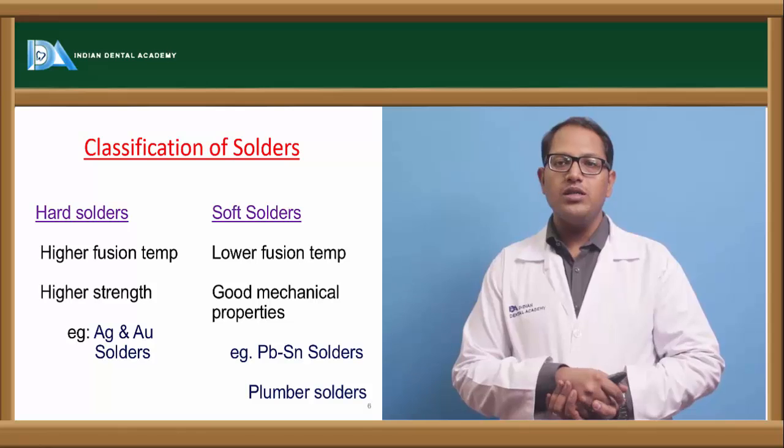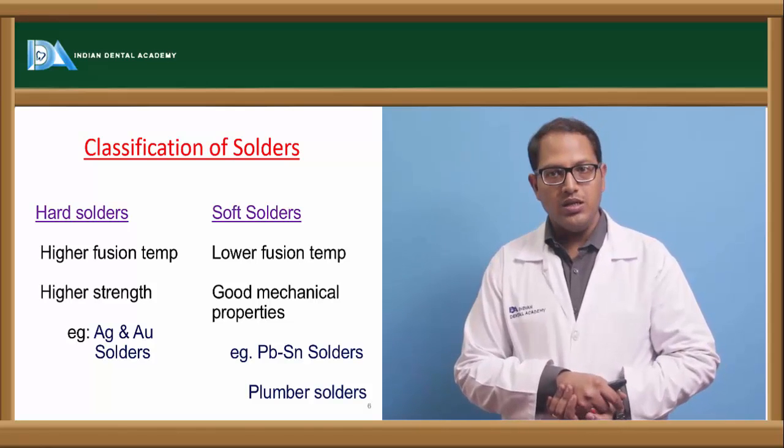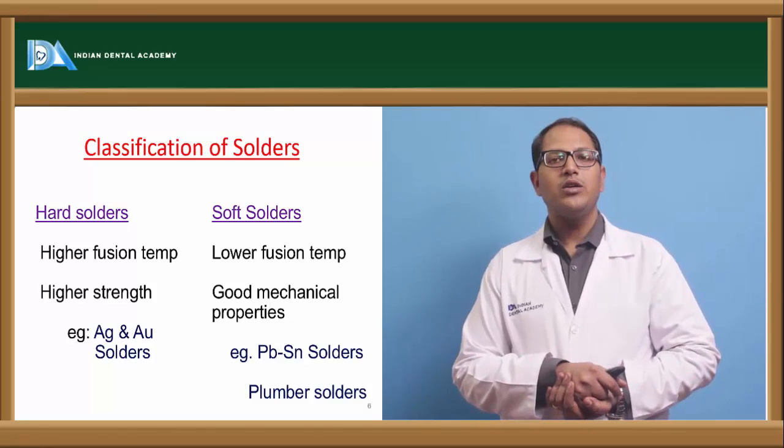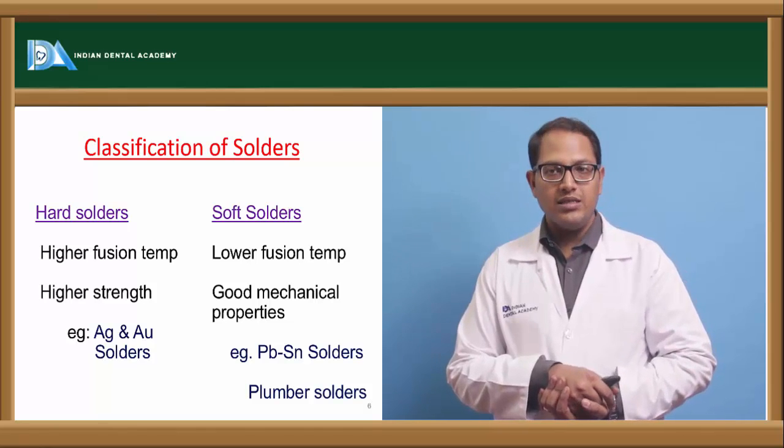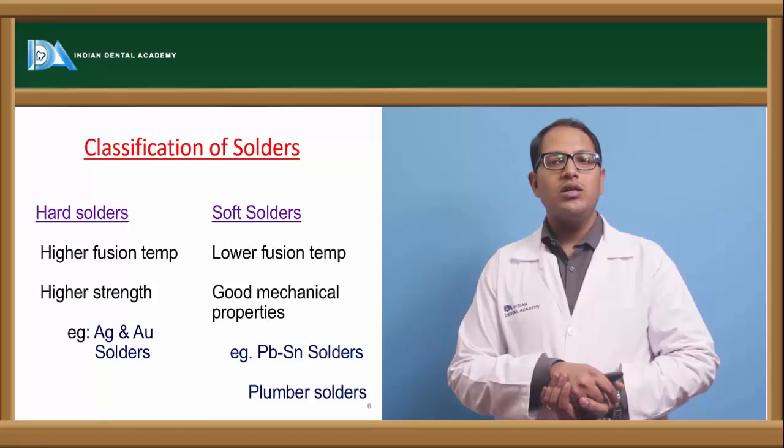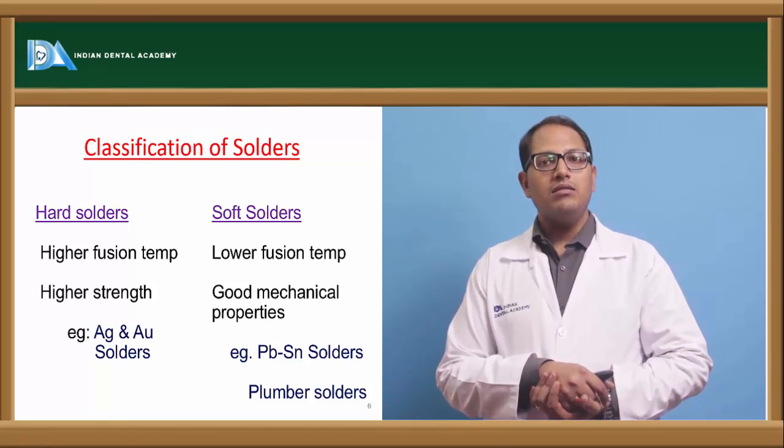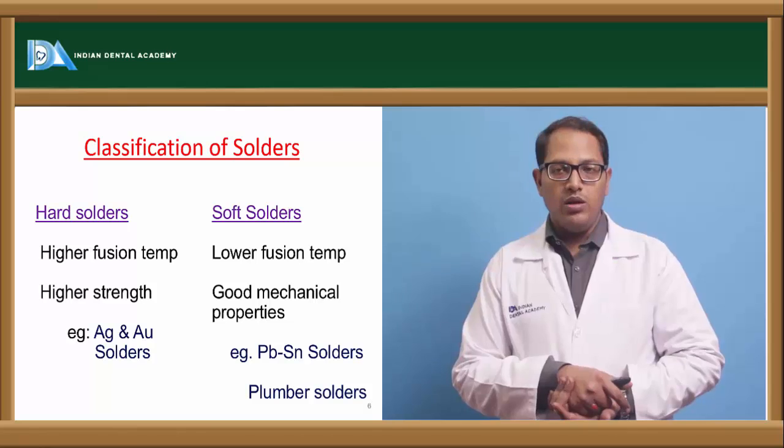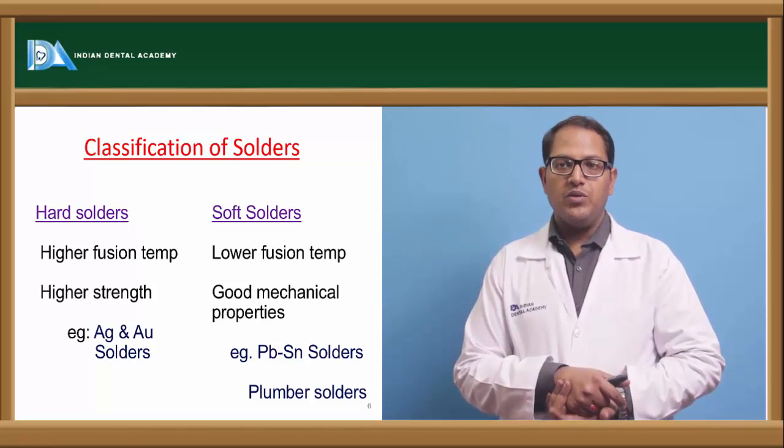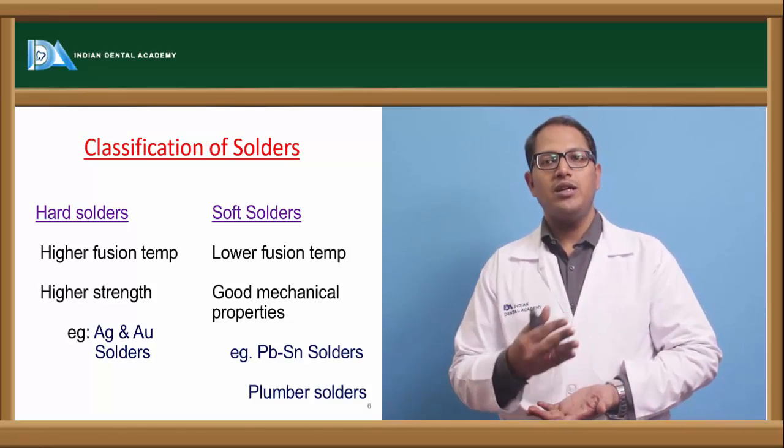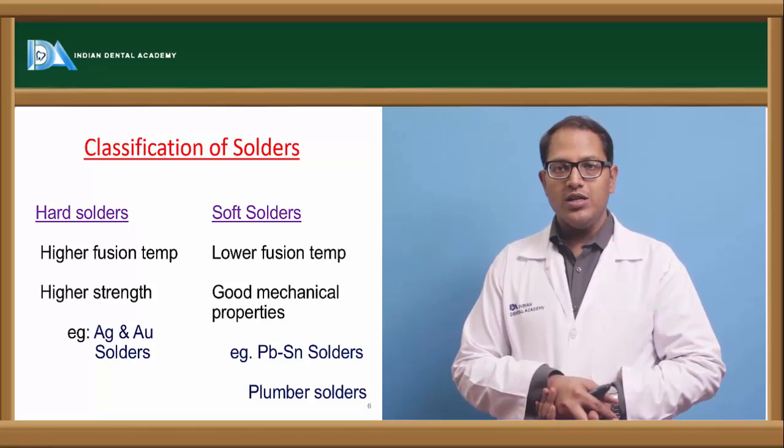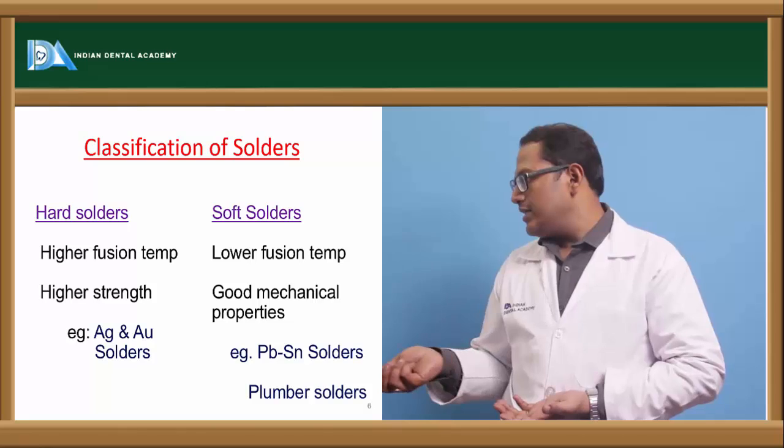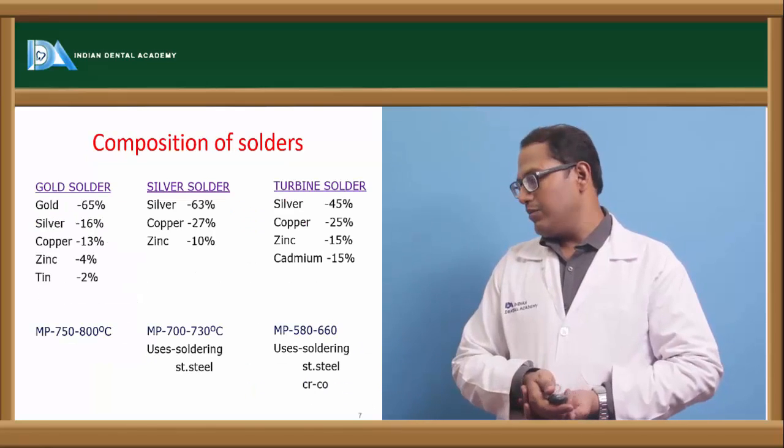Now classification of solders can be either a hard solder or a soft solder. Hard solder like gold and silver, soft solder like PBS and tin. Now hard solder means the higher the fusion temperature, higher the strength will be. Soft solder means the fusion temperature will be less and there are good mechanical properties. These are the examples of plumber solders.